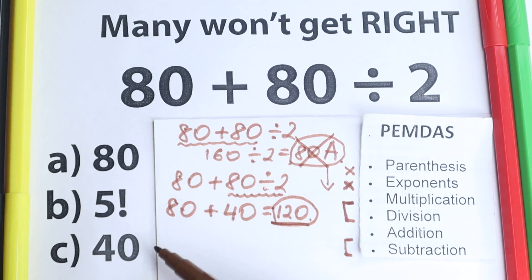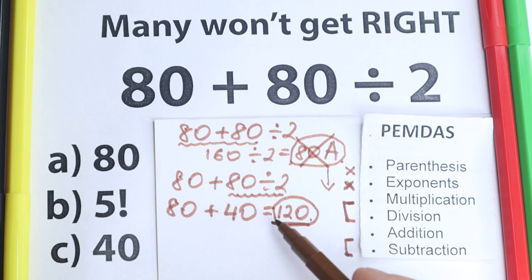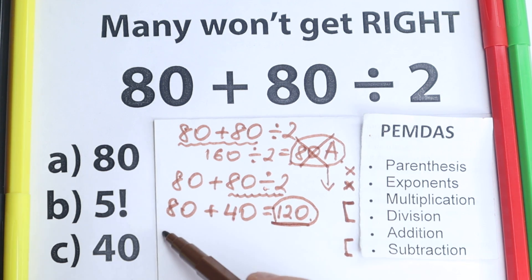So take a look closely, we have 80, this is not 120, this is 40, this is not 120, but 5 factorial. Let's remember or let's learn about this factorial.